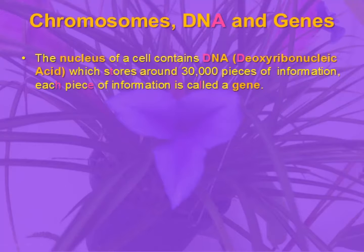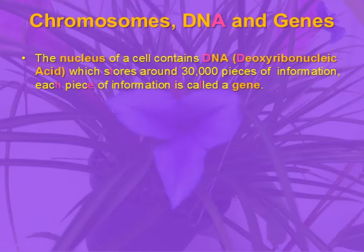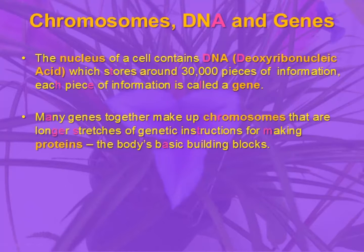Basically, the nucleus of a cell contains DNA, which stands for deoxyribonucleic acid, and DNA stores around 30,000 pieces of information, and each piece of information is called a gene. So, many genes together make up chromosomes that are long stretches of genetic instructions, and these make proteins, which are the body's basic building blocks.